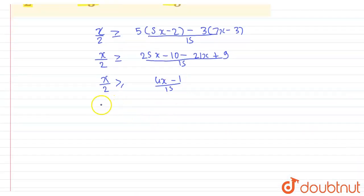We can take the LCM. So our LCM is 30. So multiply 30, and this value x/2 becomes, greater than or equal to multiply 30, and this value is 4x minus 1 upon 15.